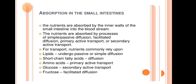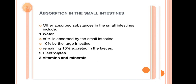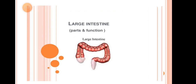Absorption in the small intestine: nutrients are absorbed by the inner walls of the small intestine into the bloodstream via simple passive diffusion, facilitated diffusion, primary active transport, or secondary active transport. Lipids undergo passive or simple diffusion; short-chain fatty acids — diffusion; amino acids — primary active transport; glucose — secondary active transport; fructose — facilitated diffusion. Other substances absorbed in the small intestine include: water (80% absorbed by small intestine, 10% by large intestine, remaining 10% excreted in feces), electrolytes, vitamins, and minerals.